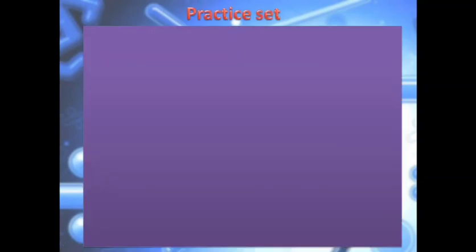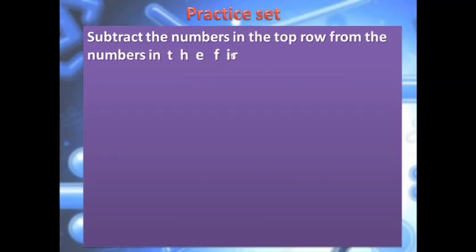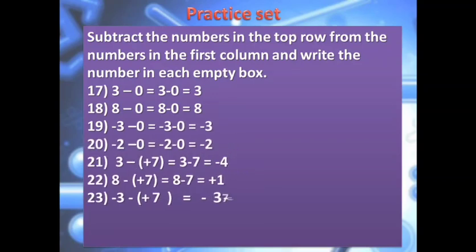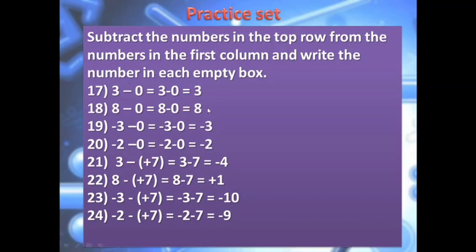Coming to the next set of questions from the same practice set. 3 minus 0 is 3; 8 minus 0 is 8; minus 3 minus 0 is minus 3; minus 2 minus 0 is minus 2. Anything subtracted from 0 is the same number. Now: 8 subtracted from positive 7 — opposite of positive 7 is negative 7. So 8 minus 7 is positive 1 — 8 is bigger with positive sign. Minus 2 subtracted from plus 7 — opposite of plus 7 is negative 7. So minus 2 and minus 7 have the same sign: 7 plus 2 is 9. Bigger number 7 has negative sign, so the answer is negative 9.